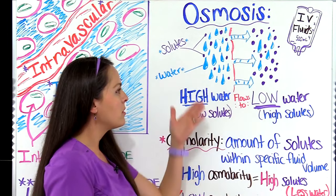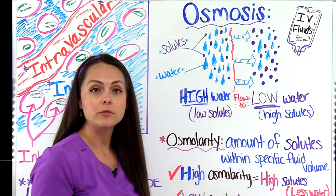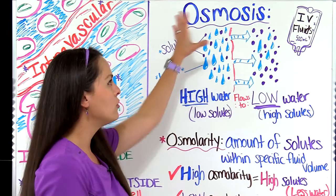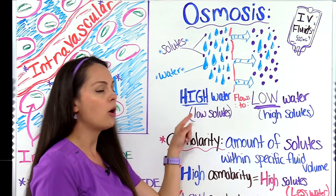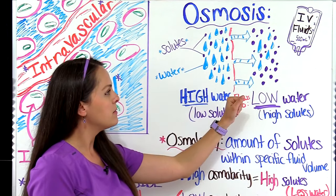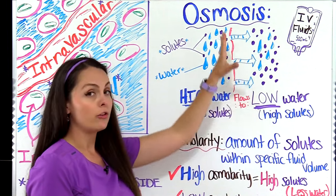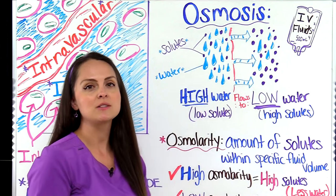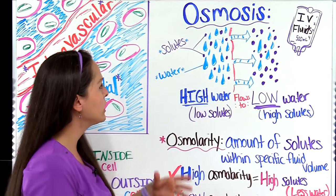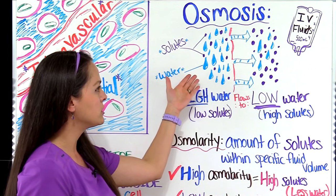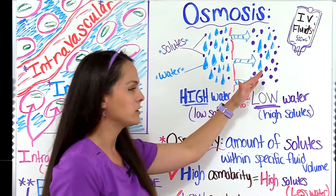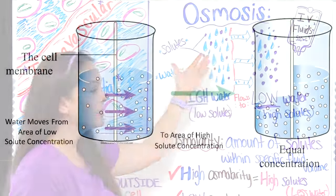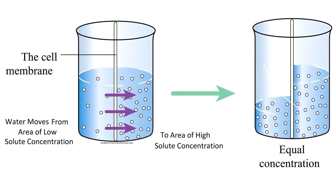Let's illustrate this process by looking at this drawing. Here we have our semi-permeable membrane, which is only permeable to water. On one side of the membrane, we have a lot of water molecules but not a lot of solutes. On the other side of the membrane, we have not a lot of water molecules but a lot of solutes. So according to osmosis, water is going to move from a higher concentration of water to a lower concentration of water — or water is going to move from the place where there's not a lot of solutes to a place where there are a lot of solutes.